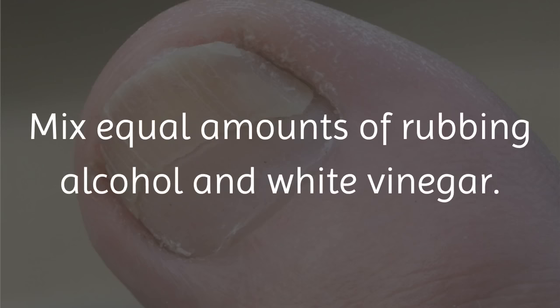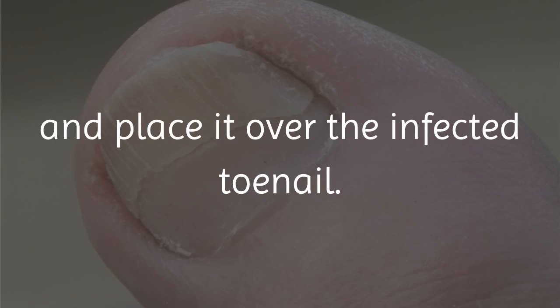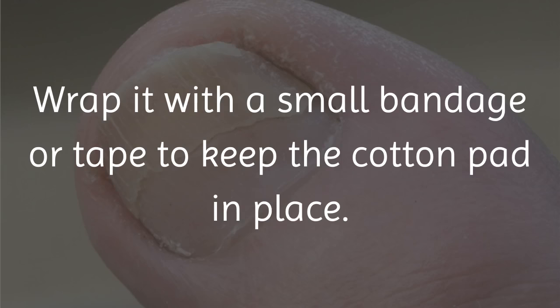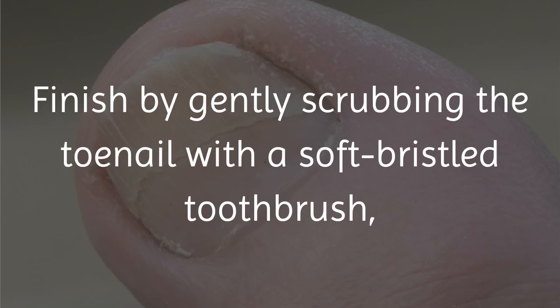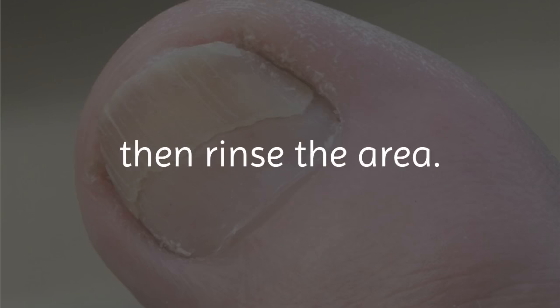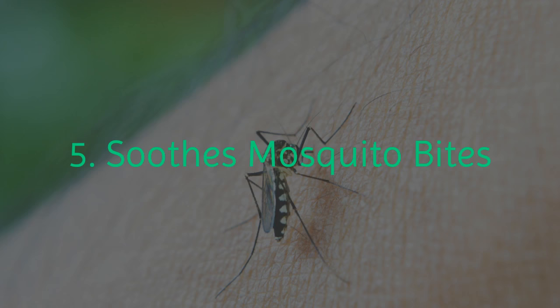Mix equal amounts of rubbing alcohol and white vinegar. Soak a thick pad of cotton in the solution and place it over the infected toenail. Wrap it with a small bandage or tape to keep the cotton pad in place. Allow it to sit for about 30 to 45 minutes. Finish by gently scrubbing the toenail with a soft-bristled toothbrush, then rinse the area. Use this remedy once daily for several days.